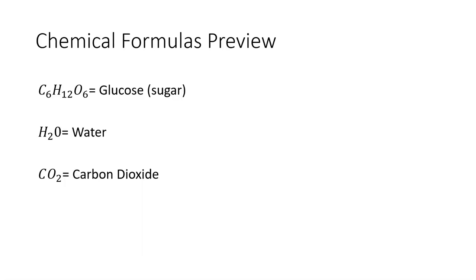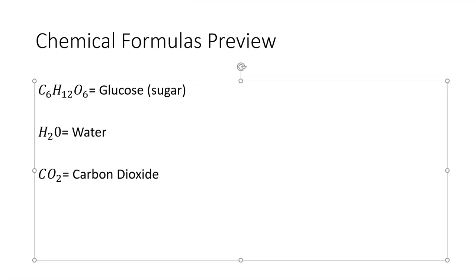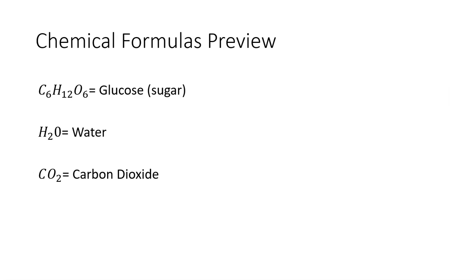Some chemical formulas that you should just preview and get familiar with — there's really not that many in this lecture. Just so that you are aware, that is one really important one. C6H12O6 is the chemical formula for glucose, which is also just a form of sugar, and that's going to be really important today. We have H2O, which you should know, and we have CO2, which is carbon dioxide. So just feel comfortable with those three.